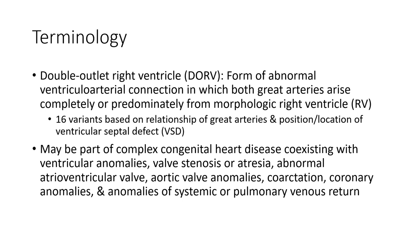There are six variants based on the relationship of the great arteries and the location of the ventricular septal defect. DORV is associated with various anomalies, including visceral heterotaxy and atresia, as well as heterotaxy and other conoventricular anomalies.